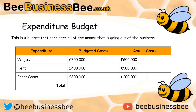Let's take a look at the expenditure budget. The expenditure budget shows all the money going out of the business — expenditure being another word for costs. As you can see, I've got expenditure of wages, rent, and other costs. In the middle column you can see the budgeted costs — that's my plan, what I plan to spend. And then the end column shows my actual costs — what I actually spent.